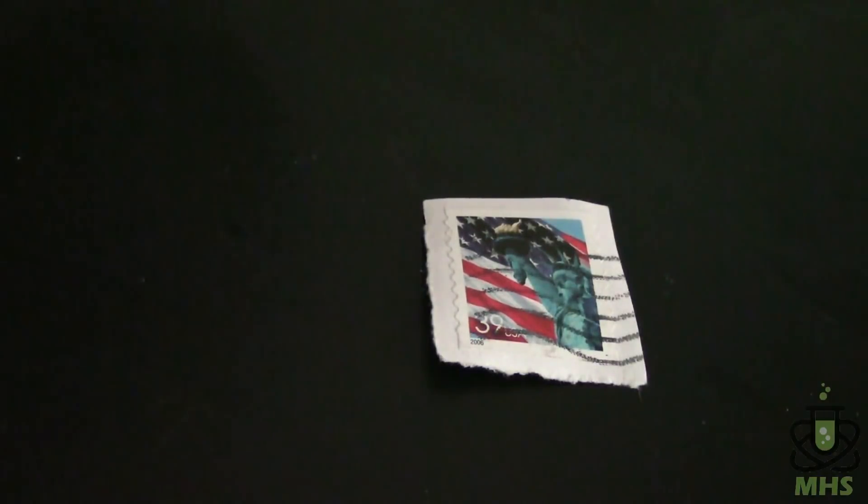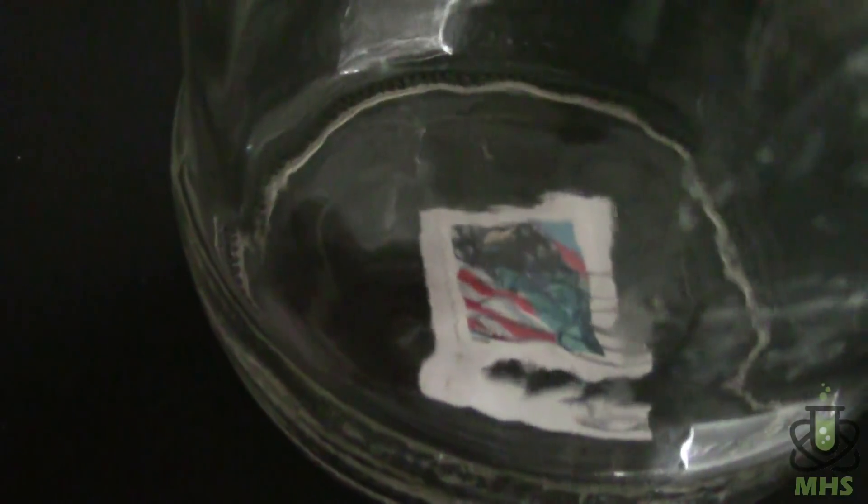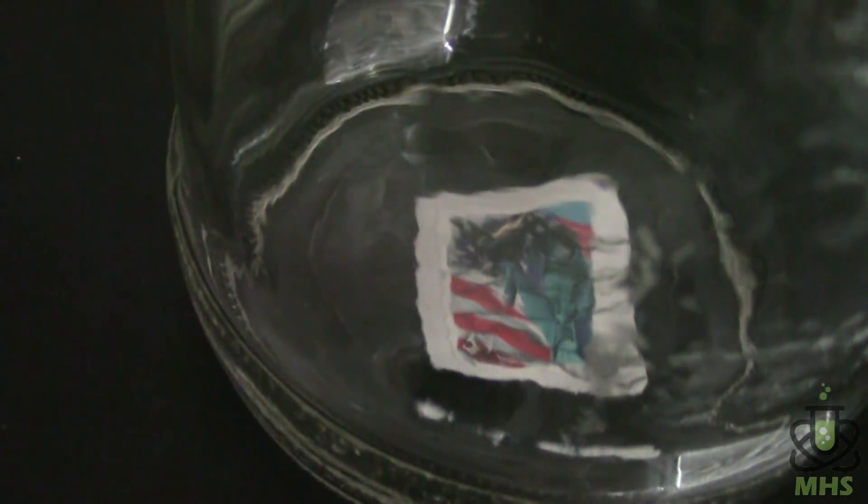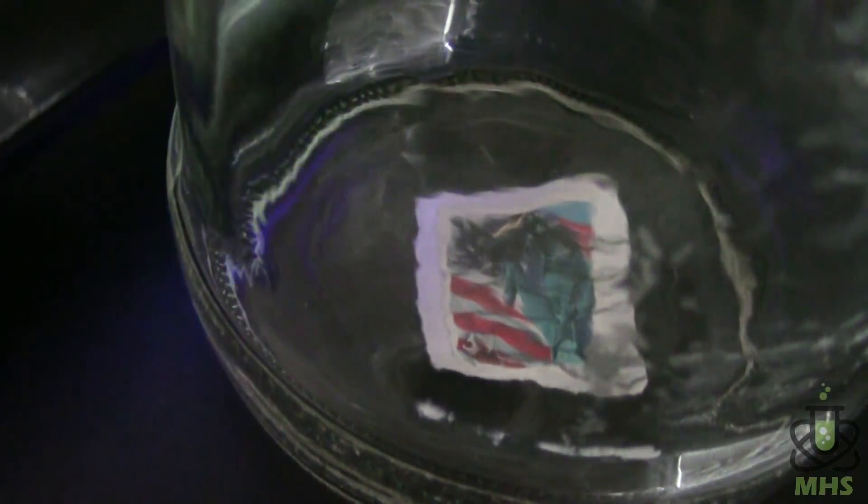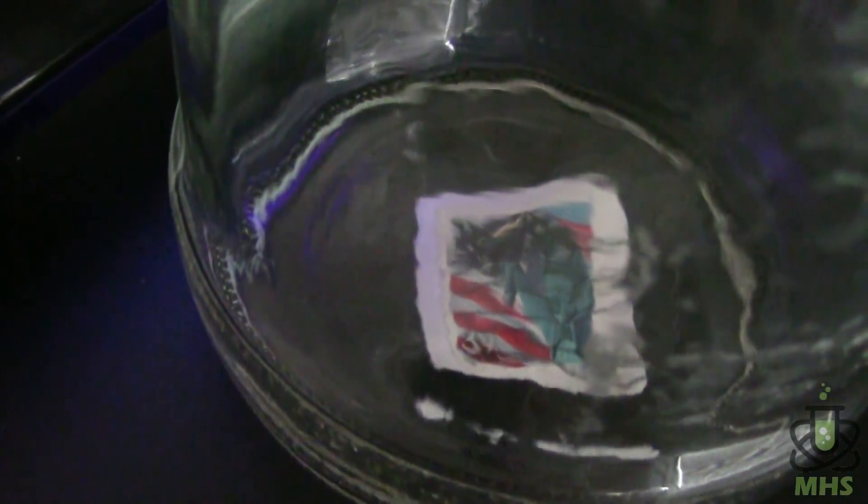Now if I take regular glass and put it over top of it, this is just a jar from the kitchen, and then when I shine the light on it it doesn't change at all. So you see that regular glass blocks UV.